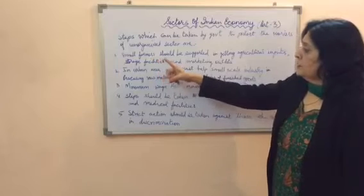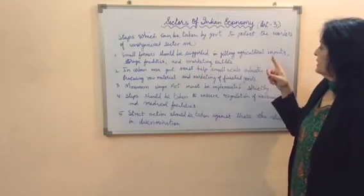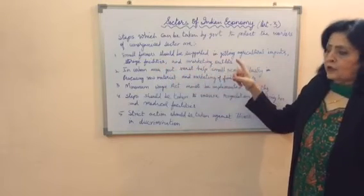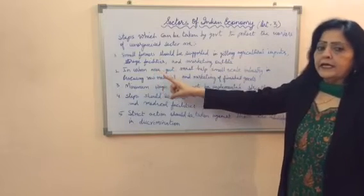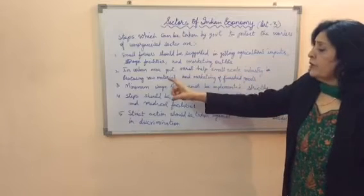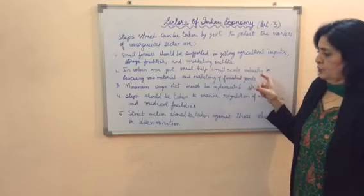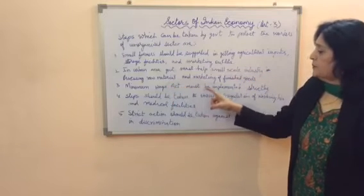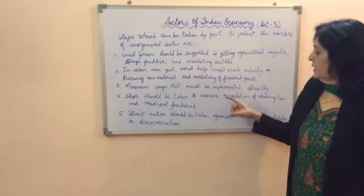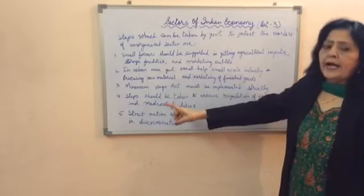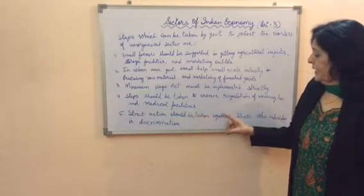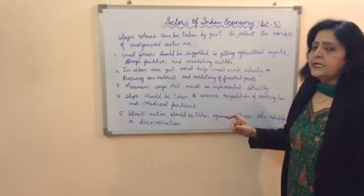The government can take steps to protect unorganized sector workers. Small farmers should be supported in getting agricultural inputs, storage facilities, and marketing outlets. In urban areas, the government must help small-scale industry procure raw materials and market finished goods. The Minimum Wages Act must be implemented strictly, working hours regulated, medical facilities ensured, and strict action taken against those who discriminate against workers.